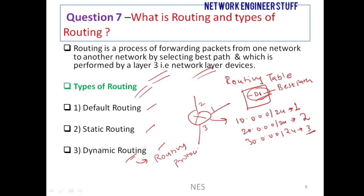There are multiple routing protocols available for dynamic routing. These are the three major types of routing: default, static, and dynamic.